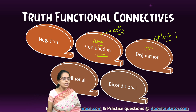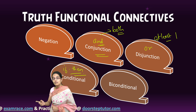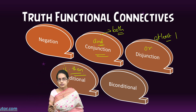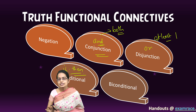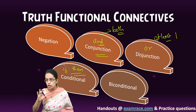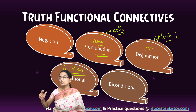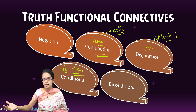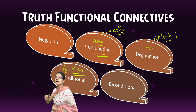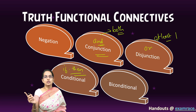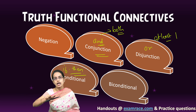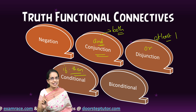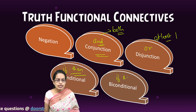Coming on to conditional — that is if-then. Conditional statements we have covered in detail in another section where we have talked about the converse, inverse, the contrapositive and so on. The conditional statement is an if-then statement, so if one of the propositions is true, then can be the other. And bi-conditional means if and only if — even if I invert the position of the subject and predicate, it would remain the same meaning.